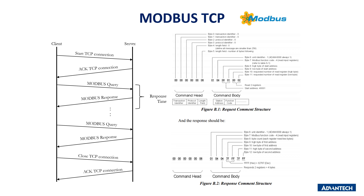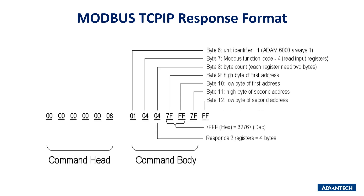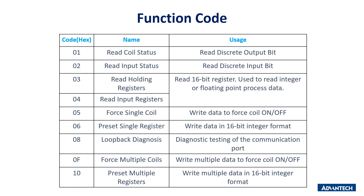Modbus TCP also needs to follow the TCP standard. Before sending Modbus commands, the client must start a TCP connection and the server will acknowledge it. Afterwards, client and server perform common Modbus actions until the client closes the connection. The Modbus TCP query command combines a command head and body — the head contains transaction ID, protocol ID, and length fields, and the command body is the same as Modbus RTU but without the CRC parameter. The function code table describes each code, its name, and utilization for both RTU and TCP. Note that the codes are in hexadecimal — programmers sometimes mistakenly treat them as decimal.